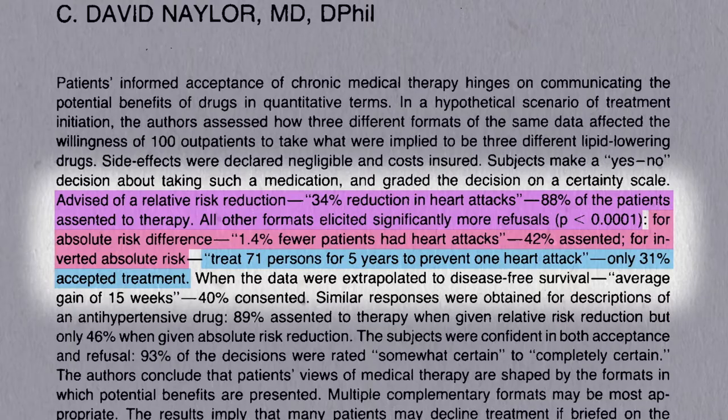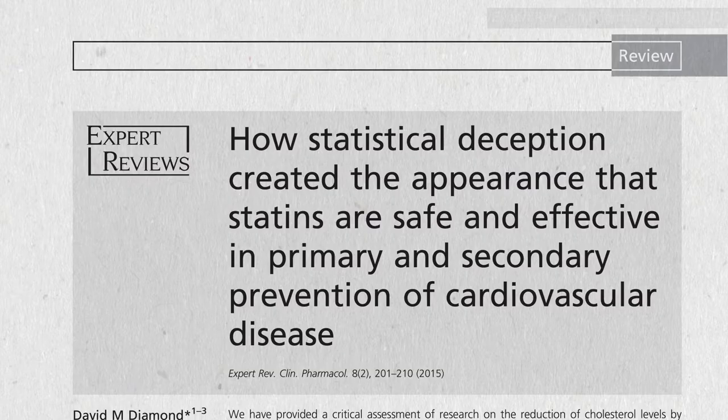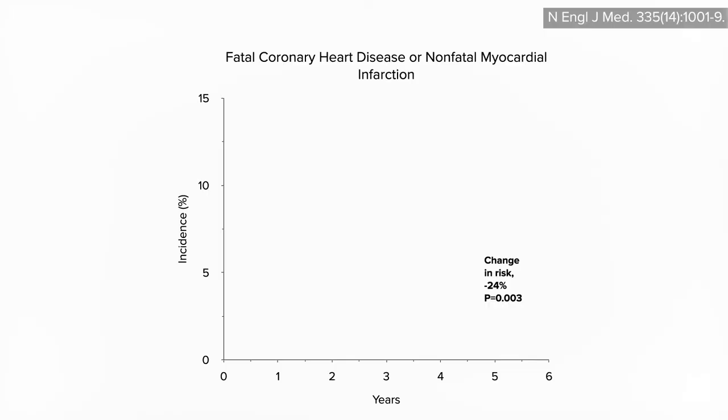So, if you're a doctor and you really want the patient to take the drug, which statistic are you going to use? The use of relative risk stats to inflate the benefits and absolute risk stats to downplay any side effects has been referred to as statistical deception. To see how one might spin a study to accomplish this, let's look at an example.